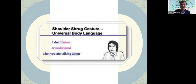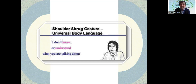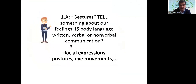The shoulder shrug gesture — according to universal body language it means I don't know, or I don't understand what you are talking about. Shrugging shoulders is a universal body language sign.